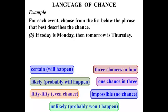What about this one? If today is Monday then tomorrow is Thursday. What's the chance of that? Well that's impossible, it's no chance. If today is Monday, obviously tomorrow has to be Tuesday. It can never be Thursday.